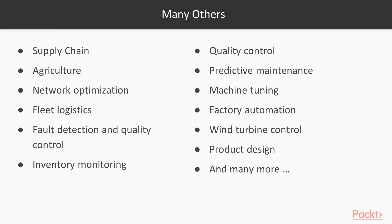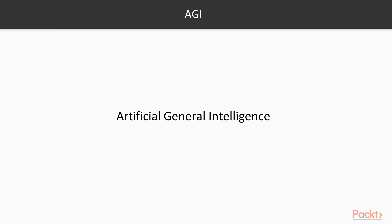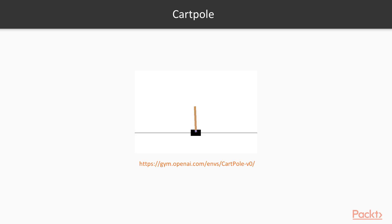Artificial general intelligence — the intelligence of a machine that could successfully perform any intellectual task that a human being can — is considered the holy grail of artificial intelligence, and reinforcement learning is considered the most encouraging and most viable approach to attain it. Finally, in our exercise, we are going to train a cart to balance a pole all by itself by adjusting its movements left and right, using reinforcement learning and deep Q-networks.